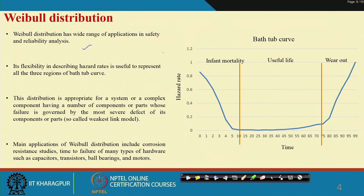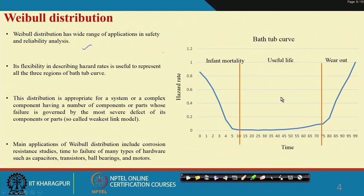Let us see some of the basics of Weibull distribution. It is an interesting continuous distribution and it has a good relation with hazard rate, because it can describe the hazard rate with its beta parameter. We discussed earlier what the hazard rate is and plotted it in terms of the bathtub curve, which has three regions: infant mortality, useful life, and wear-out phase.